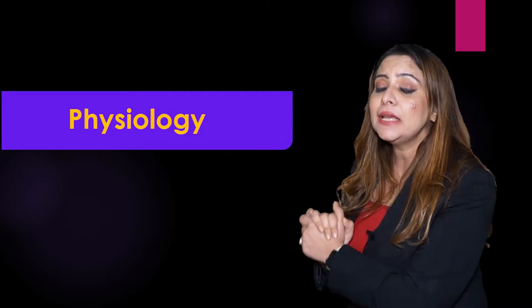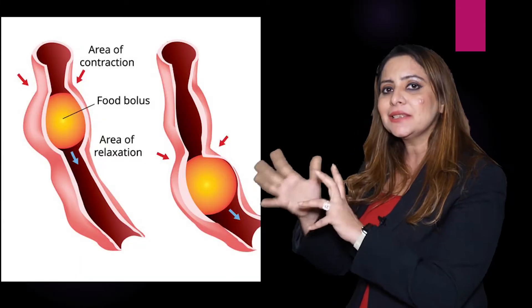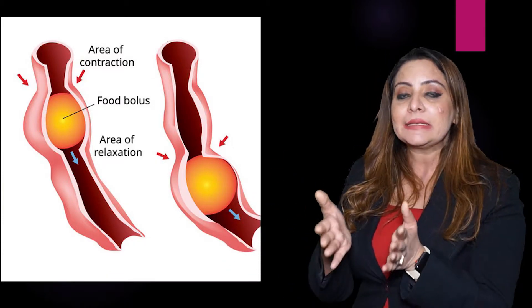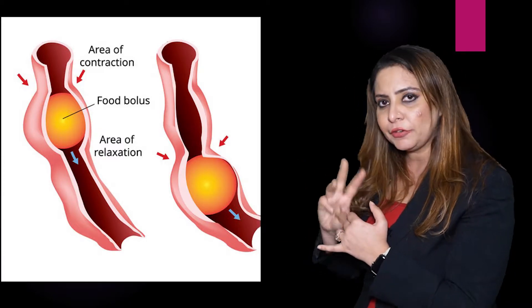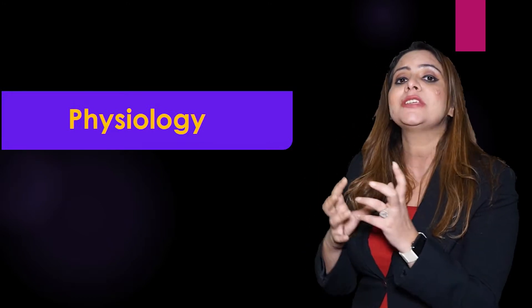The small intestine leads into a tube that is quite short and wide, called the large intestine. Though the name is large, it is comparatively shorter in length. It is roughly divided into three parts: the first part is the cecum, the middle part is the colon, and the ending part is the rectum. Finally, the last opening is the anus, where anal sphincters control movement.